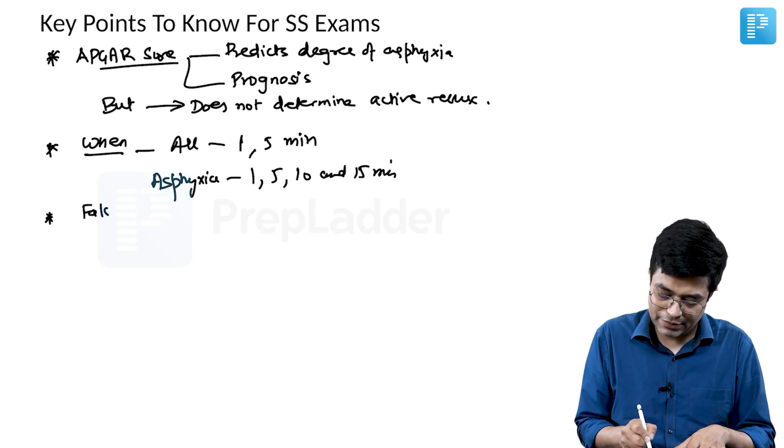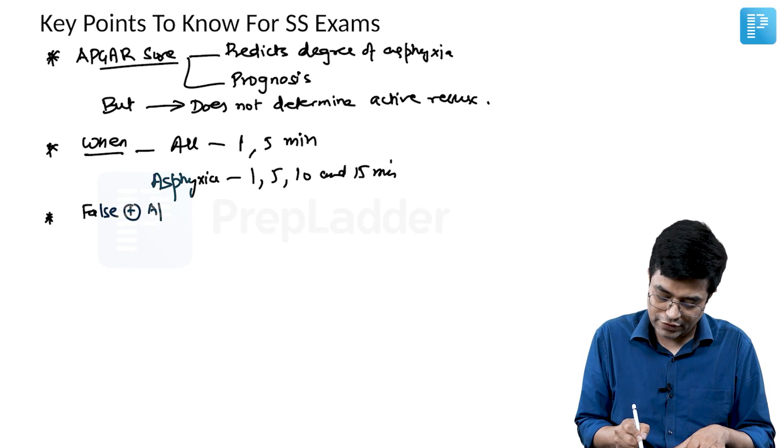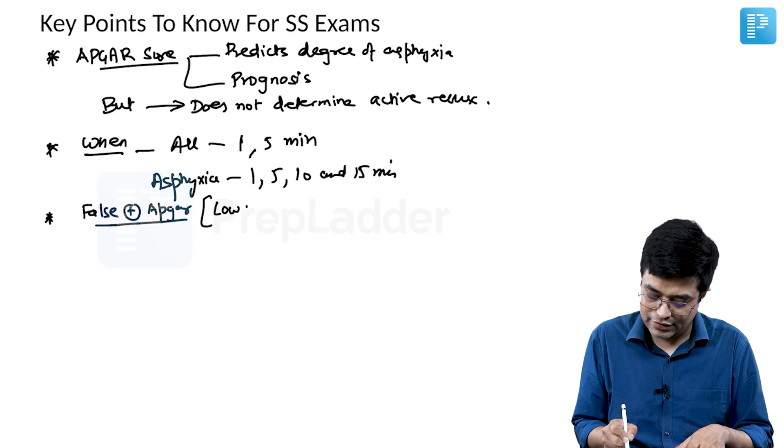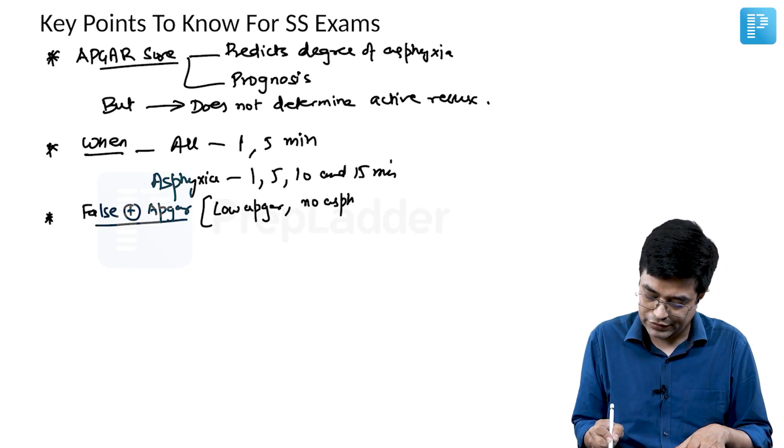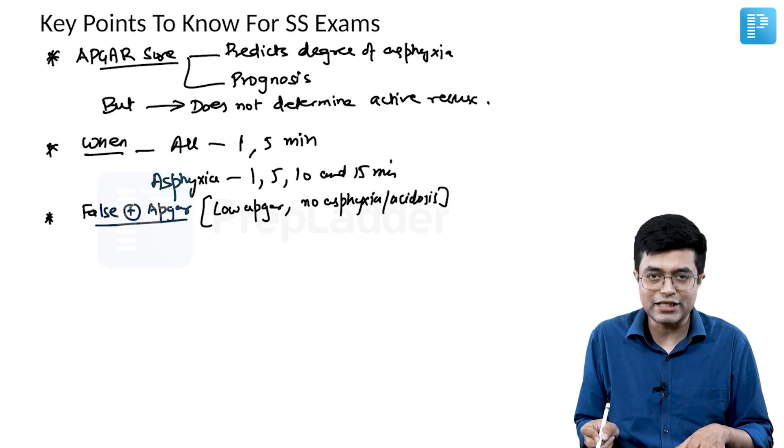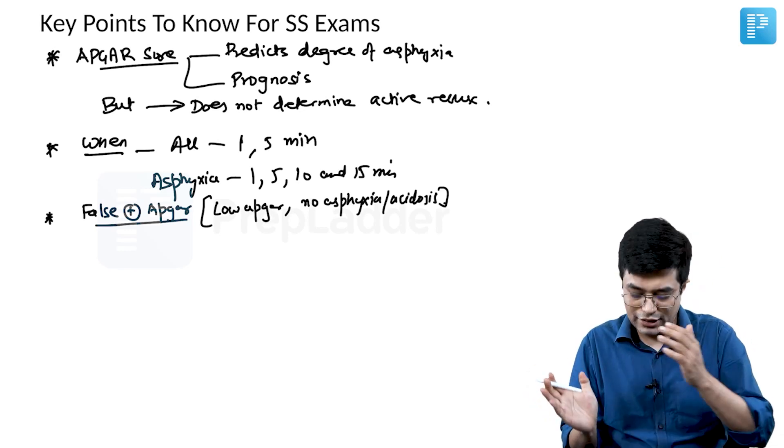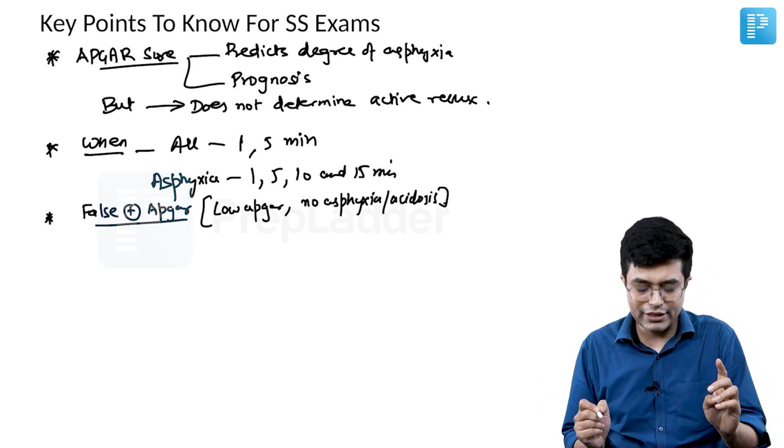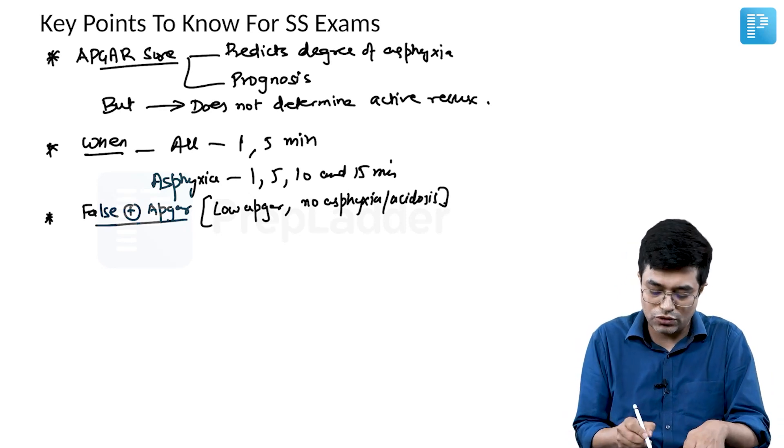And then, what is false positive APGAR score? False positive APGAR score basically means there is a low APGAR, but there is no asphyxia or acidosis in the child. So the child did not have HIE, the child did not have asphyxia, but the APGAR score you found to be relatively low, 6 or below. You will call it as false positive. There are a lot of causes of false positive APGAR score.